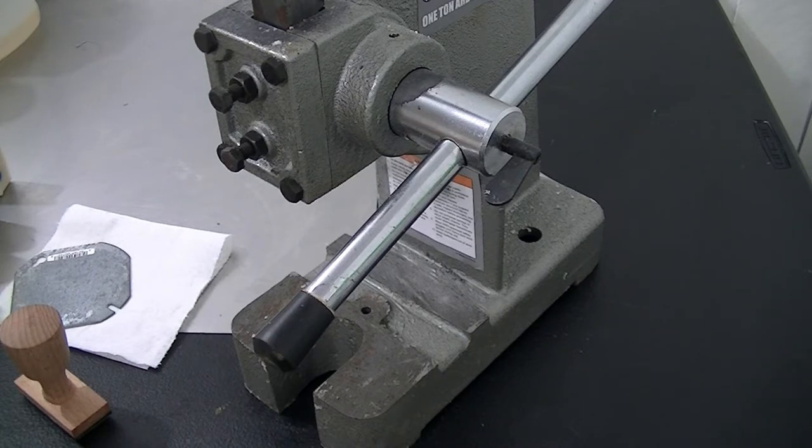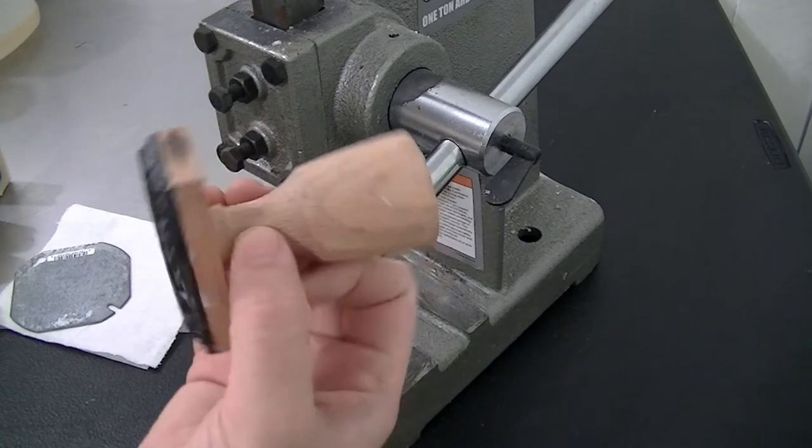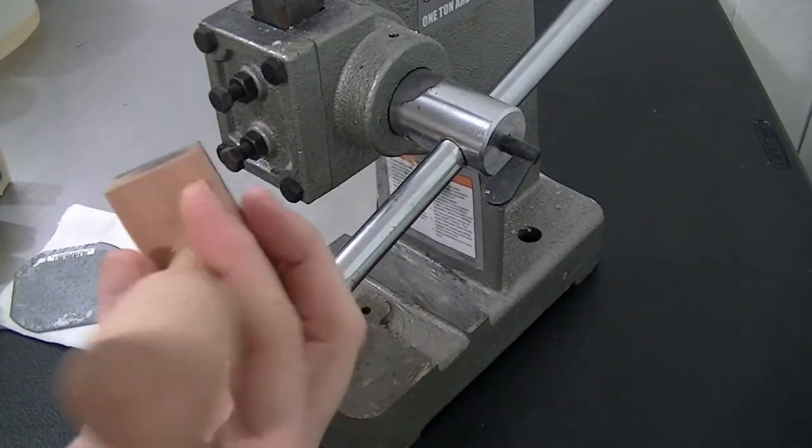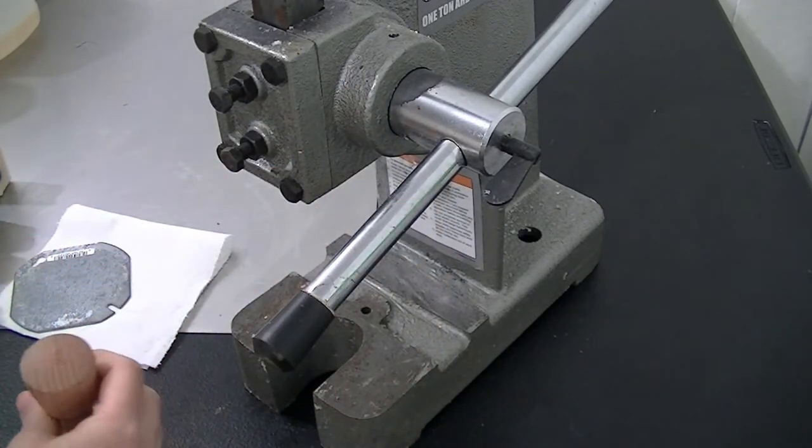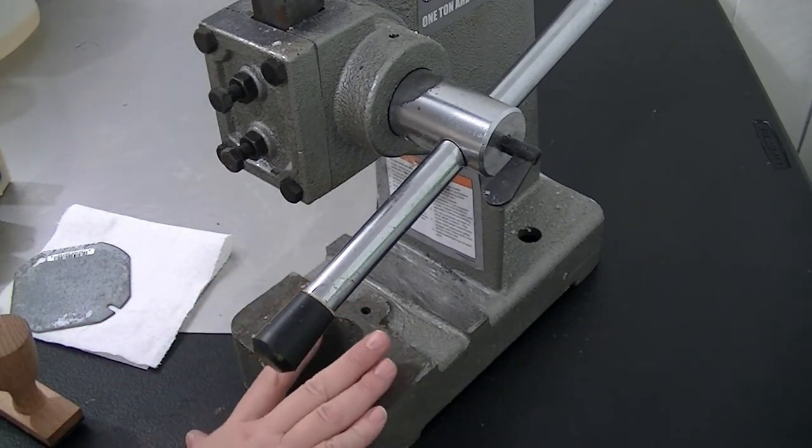I did do a video, I think it was last year, showing you how I stamp my cold process soaps, but I'm using the same stamp. It's just a wooden stamp that I got from a seller on Etsy. It's the same stamp, but I'm using my Arbor Press to do all the hard work for me.